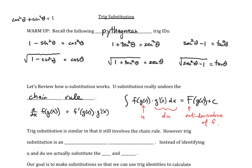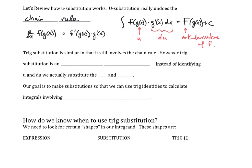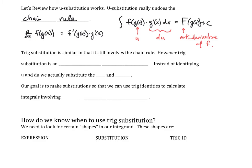Trig substitution is similar in that it still involves the chain rule. However, in trig substitution we have an inverse substitution. So instead of identifying the u and the du, we are actually going to substitute the x and the dx — this works backwards in some sense. In reality, we're going to make our integral look more complicated at first, but then use trig identities to simplify it.